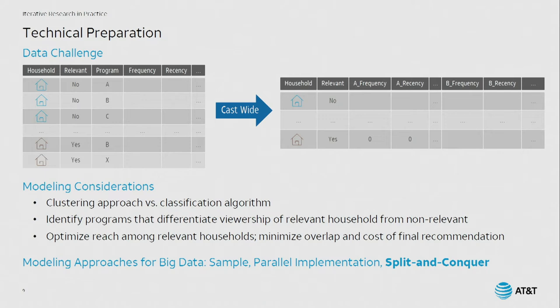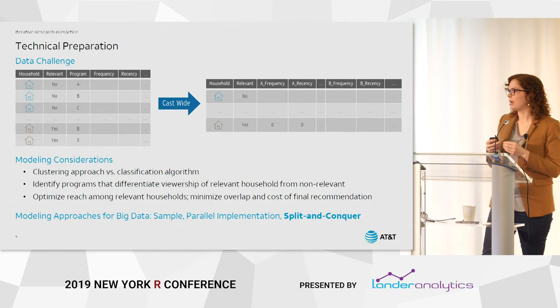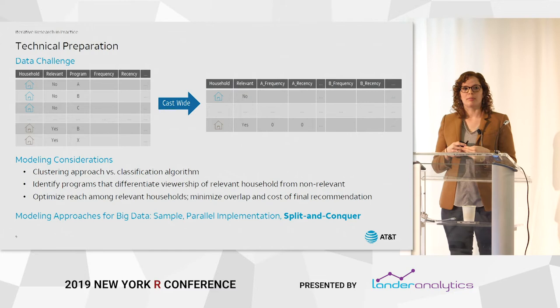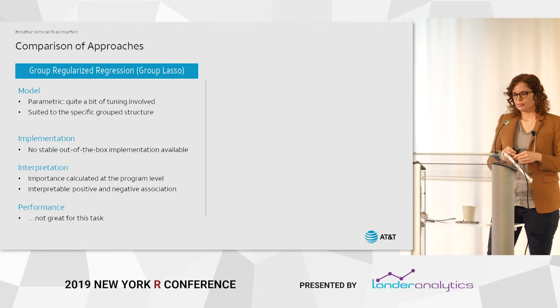Typically modeling approaches for big data take one of three options: you can take a sample (a statistician's first move), move into a parallel implementation (very common at AT&T Labs), or do a split-and-conquer — which is what we ended up doing. That meant splitting our training data into chunks, training a model on each chunk, and then ensembling them together for final prediction.